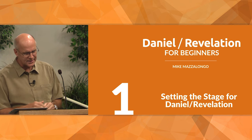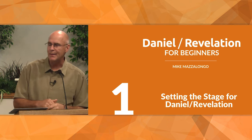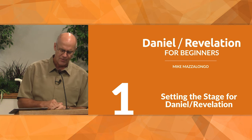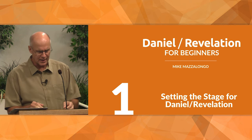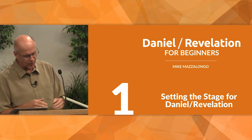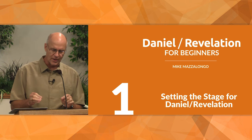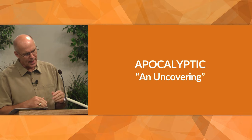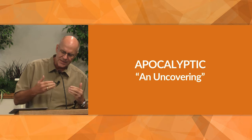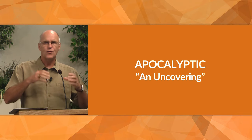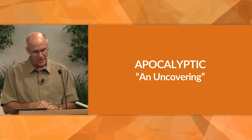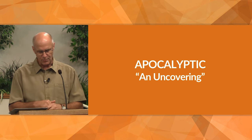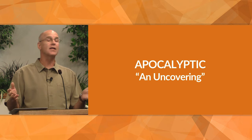It was written in a style of writing called apocalyptic. The word apocalyptic comes from a Greek word which means an uncovering. So apocalyptic literary style, which you find a lot of in the book of Revelation, was used by Old Testament prophets when they were prophesying concerning world events.